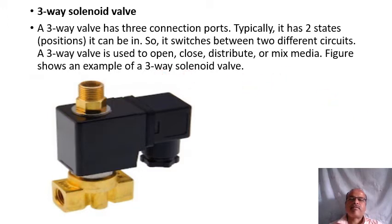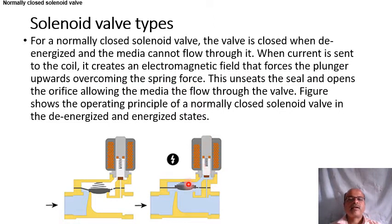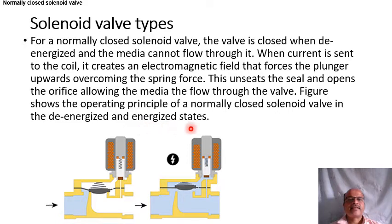For a normally closed solenoid valve, the valve is closed when de-energized and the media cannot flow through it. When current is sent to the coil, it creates an electromagnetic field that forces the plunger upward, overcoming the spring force. This unseats the seal and opens the orifice, allowing the media to flow through the valve.